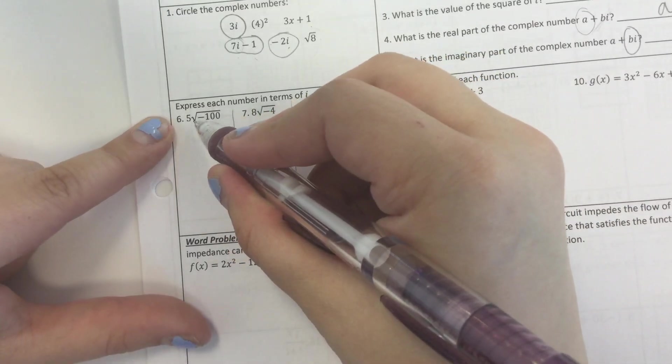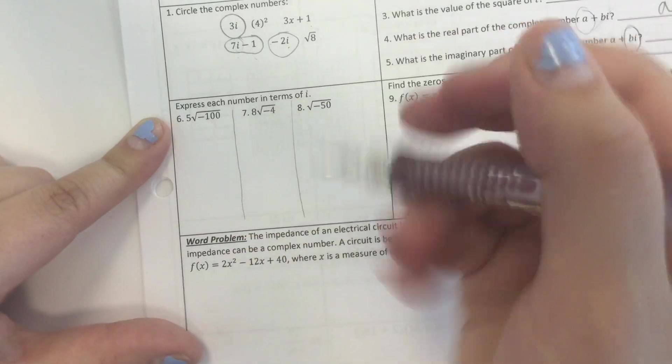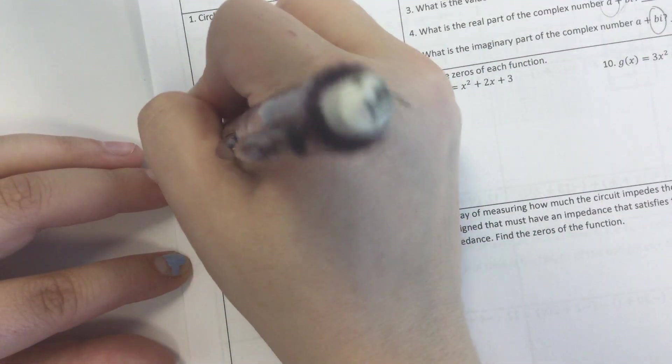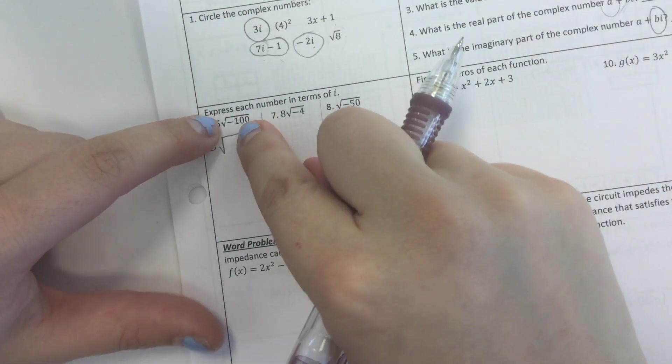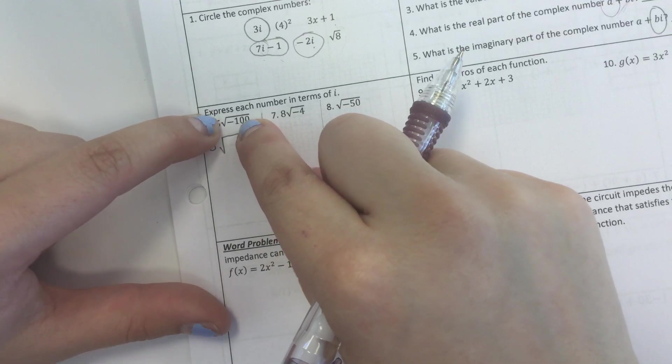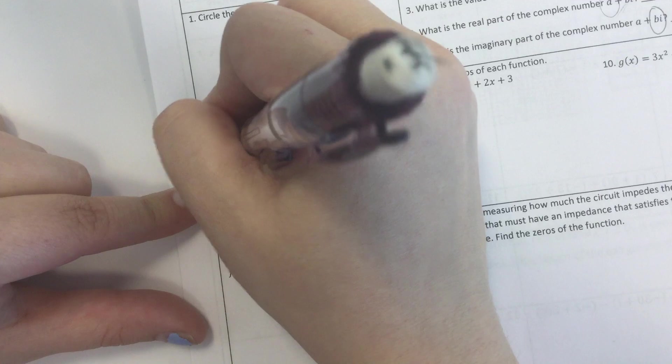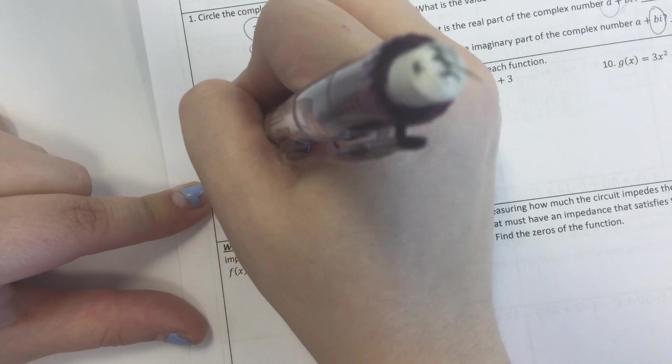So 5 times the square root of negative 100. Here's how we're going to break this up. 5 is going to stay out there. I'm going to divide negative 100 by negative 1 and just leave that in there. It's going to look like this: 100 times negative 1.